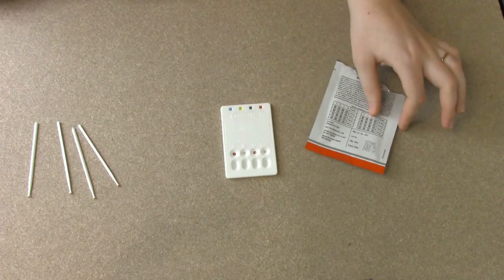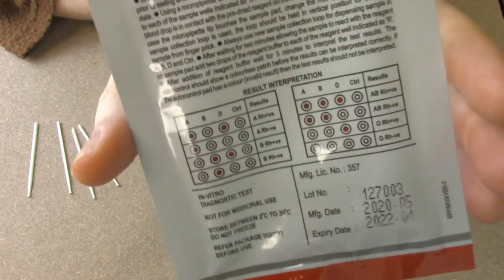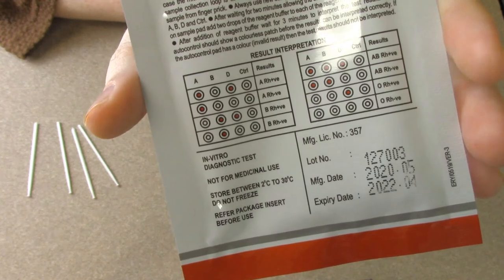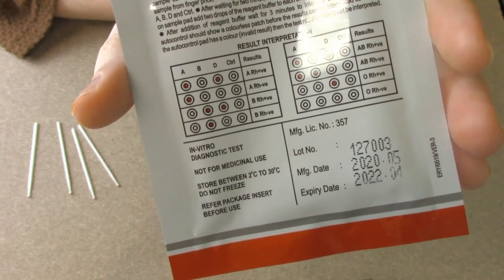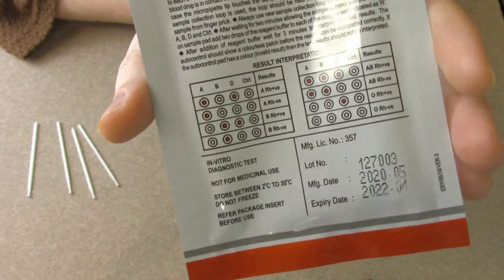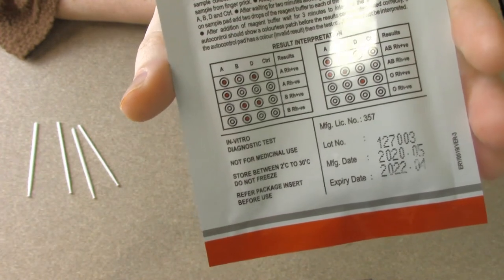So if you look at this card here, if we're reading and trying to interpret my results, you see that the first one there, A and D have remained red and the B and control have become clear. So I have A positive blood. Now I knew ahead of time that I did have A positive blood and I'm really confident that this result is accurate.